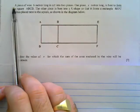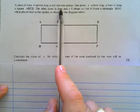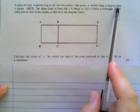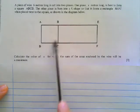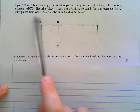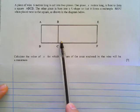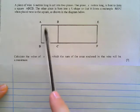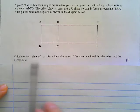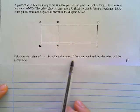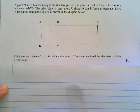The first question goes as follows. A piece of wire 6 meters long is cut into two pieces. One piece, X meters long, is bent to form a square ABCD. The other piece is bent into a U shape so that it forms a rectangle BEFC when placed next to the square as shown. The question ultimately asks us to calculate the value of X for which the sum of the areas enclosed by the wire will be a maximum area.